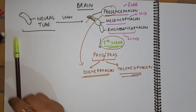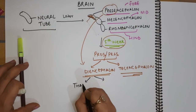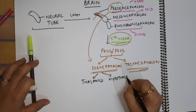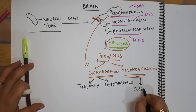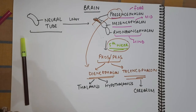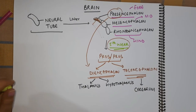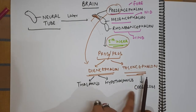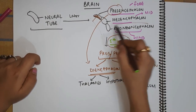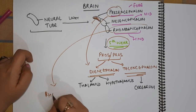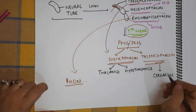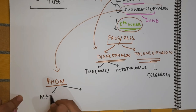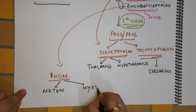We know that diencephalon comprises the thalamus and the hypothalamus. And we also know that telencephalon is what grows into the cerebrum. Meanwhile, the rhombencephalon is further dividing or classifying itself into the metencephalon and the myelencephalon.